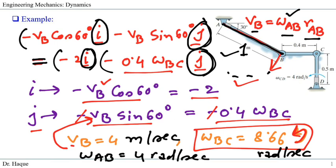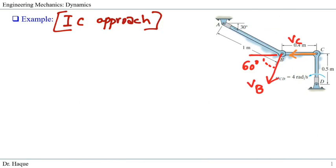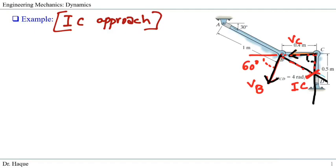Now let's solve the same problem using the instantaneous center (IC) approach. To find the IC, we use the fact that drawing perpendicular lines to V_C and V_B, their intersection gives the IC point. This forms a triangle with vertices at IC, point C, and point B. We identify the triangle and solve from there.